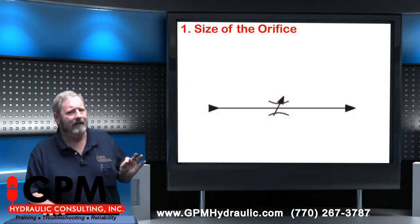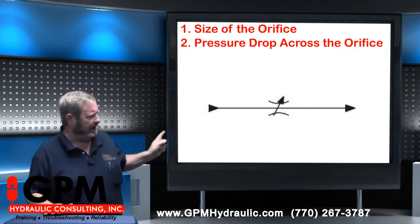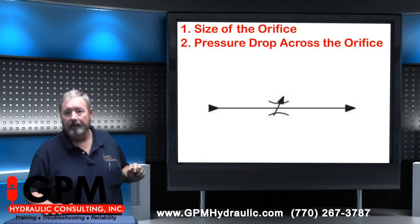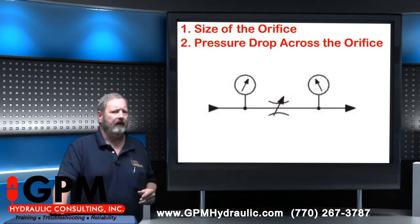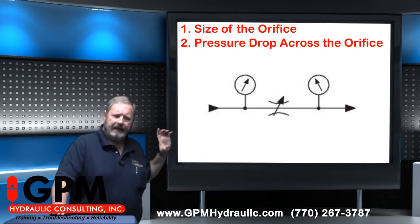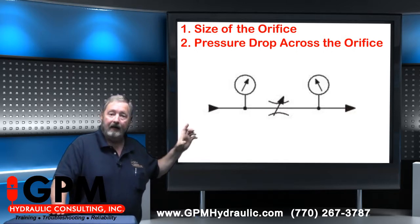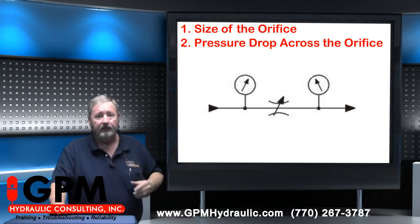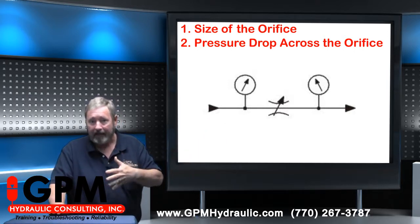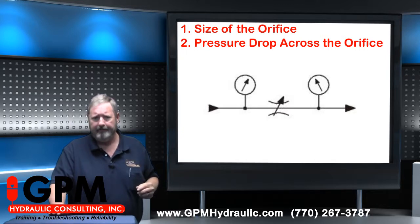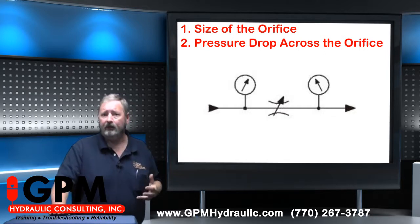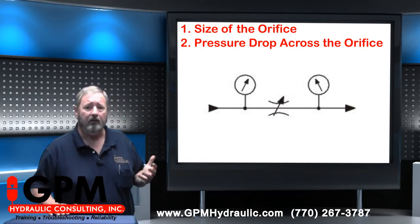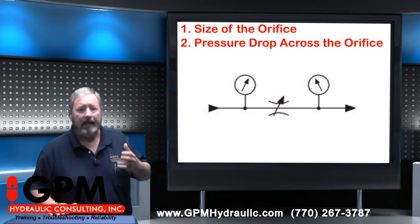Maybe not quite as obvious is the pressure difference between the inlet and the outlet of the flow control. If we install a gauge on both sides of this flow control, those two gauges aren't going to read the same. The one at the inlet will always read higher than the one at the outlet, assuming, of course, that the flow control is, in fact, restricting flow. The bigger the difference in those two gauges — in other words, the greater the pressure drop across the flow control — the greater flow and the higher speed.